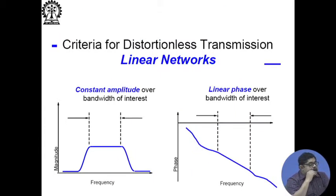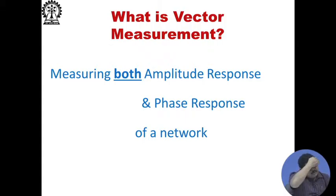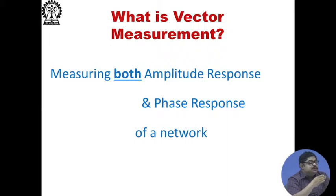For a linear network, the criterion for distortion-less transmission is that over the band of interest, the amplitude response should be flat — as shown in the left side graph — and the phase response should be linear in the band of interest. Linear networks give distortion-less transmission. Network analyzers that measure only amplitude response and not phase are called scalar network analyzers.